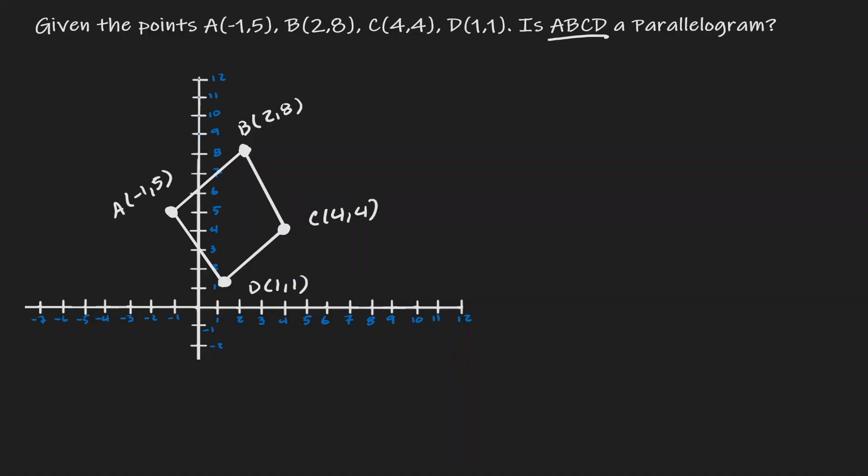And now let's think about what conditions need to be met in order for us to call this quadrilateral a parallelogram. Well, if this four-sided figure is a parallelogram, then it has to fit the definition of a parallelogram. And we know that in a parallelogram, opposite sides are parallel to each other.